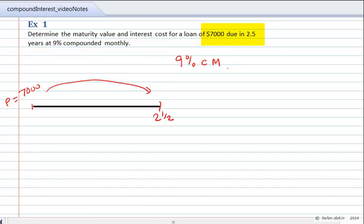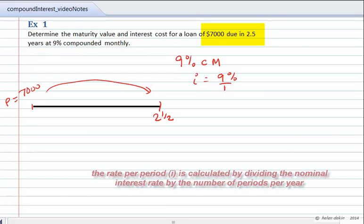And so what that means is that the nominal interest rate of 9% needs to be divided by 12 because there are 12 periods per year. And so from that, we could say that the interest rate is 9% divided by 12 per month, or the interest rate is 0.0075 per month.